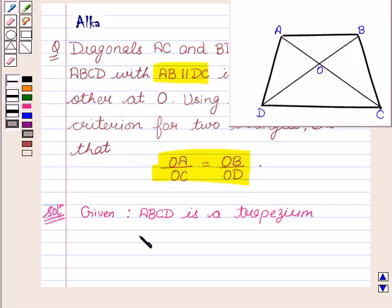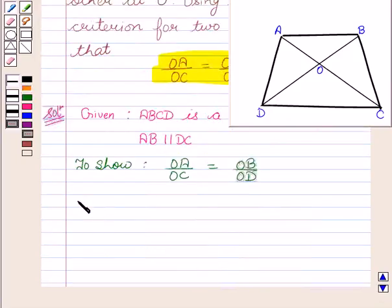AB is parallel to DC. We have to show that OA/OC = OB/OD. Now let's see the proof.